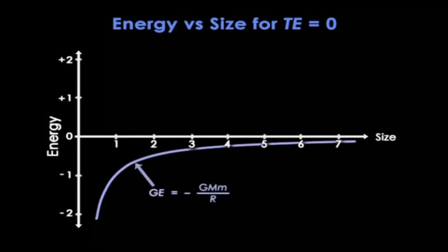So here's the diagram for a critically expanding universe. The gravitational energy is in blue. It increases towards zero as the rock moves out. Now remember that for a critical universe, the total energy must always be zero. So that's given by the red line.